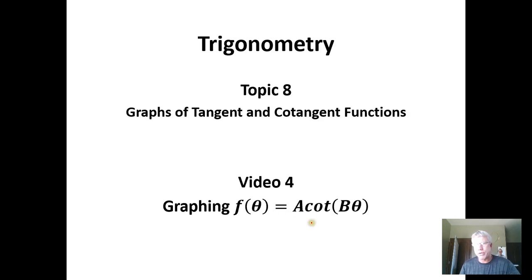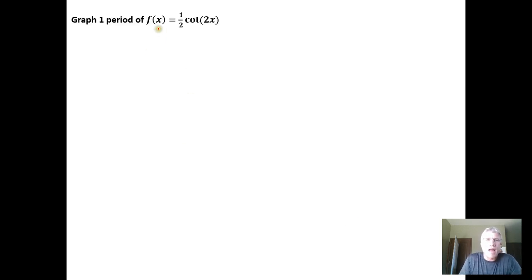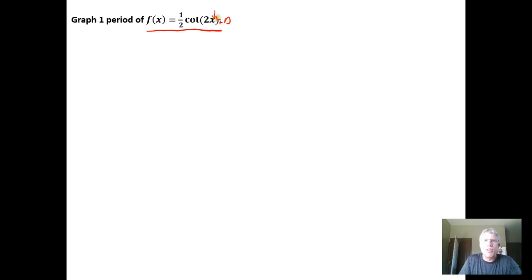In this video we're going to look at techniques for graphing the cotangent function when we have both vertical and horizontal stretching and compressing. We're going to dive in by looking at an example. We notice that we don't have any vertical shifting — no plus or minus on the outside — and no horizontal shifting, since nothing is added or subtracted to the input variable x. The only things going on are vertical compressing and horizontal compressing of the cotangent function.